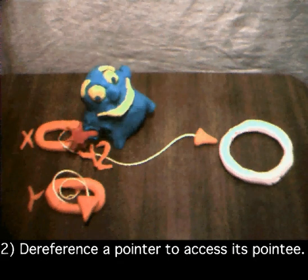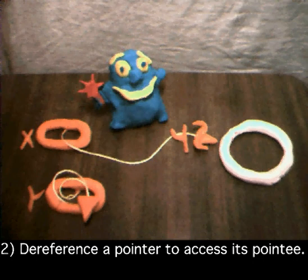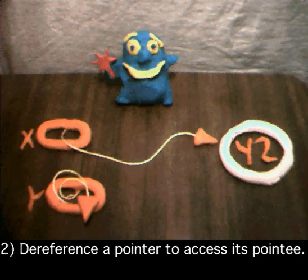Number two, pointer dereferencing starts at the pointer, and follows its arrow over to access its pointee. As we all know, this only works if there is a pointee, which kind of gets back to rule number one.